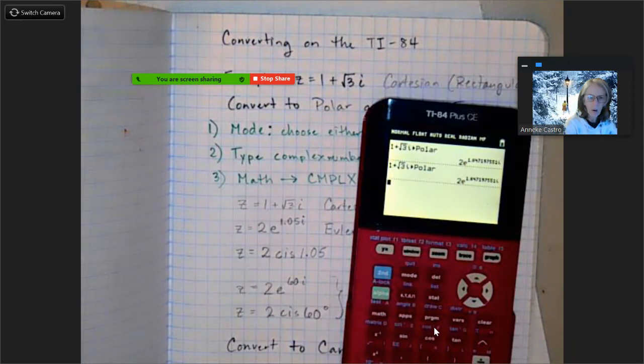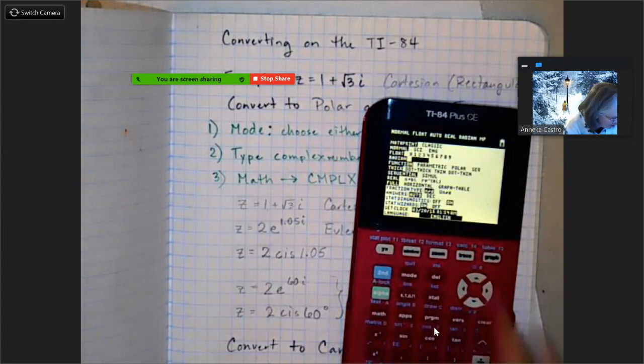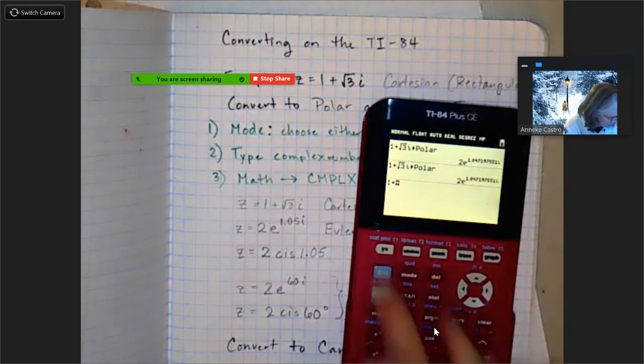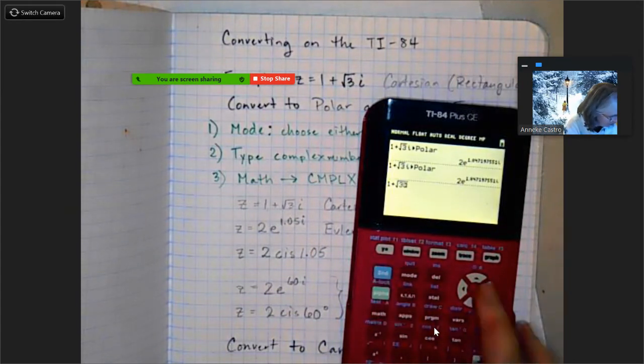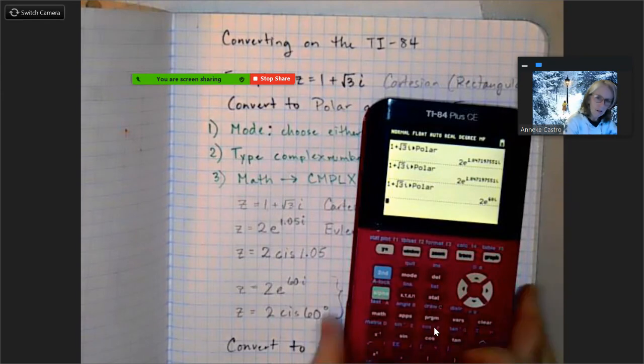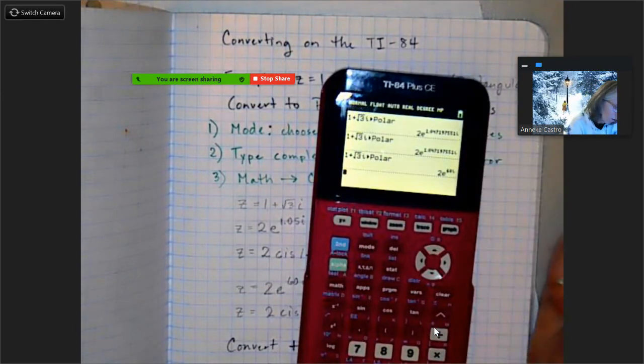And oh, I forgot to change it to degrees and run through it again. 1 plus square root of 3i. Alright, Math, complex, option 7.